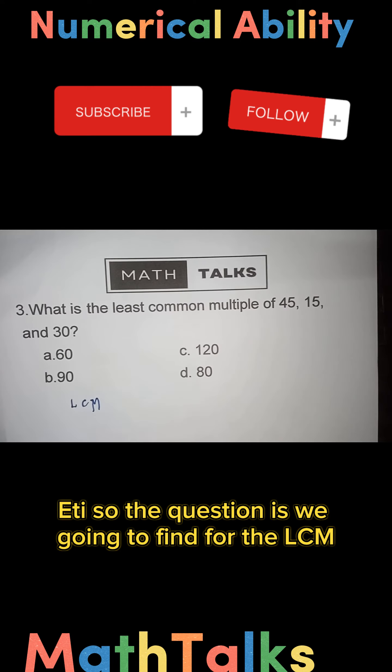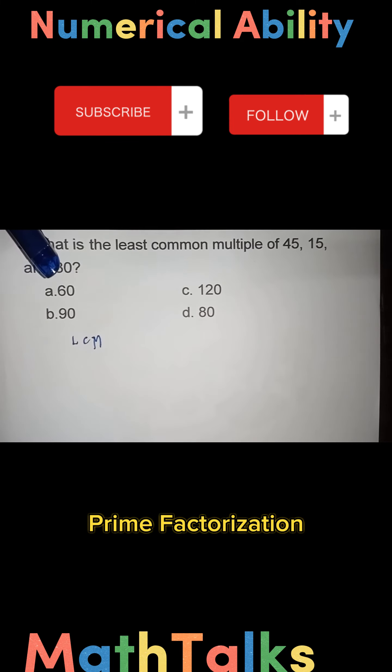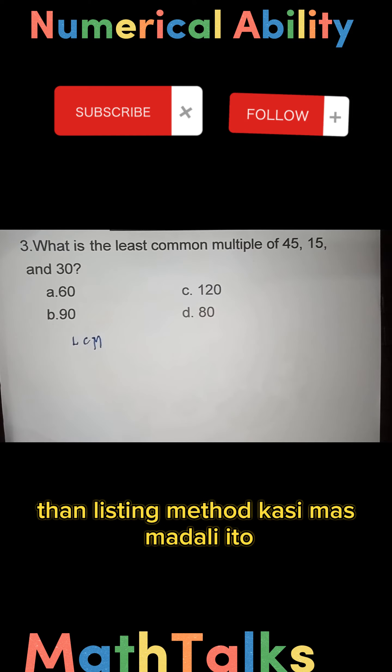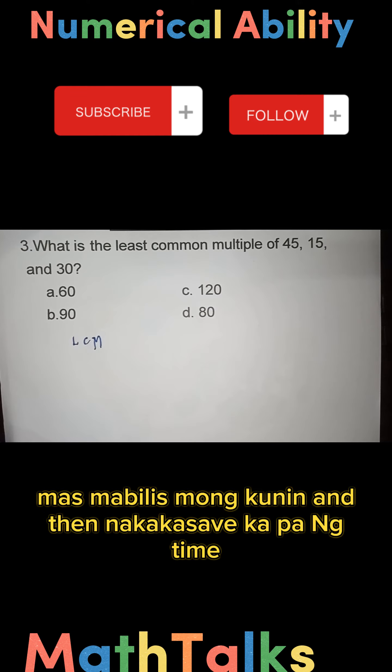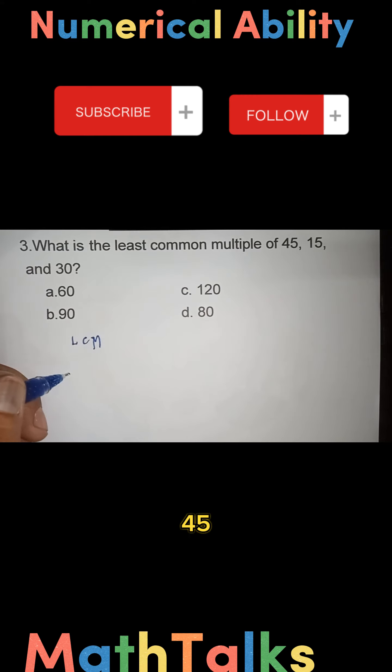I prefer you to use the prime factorization rather than the listing method because it's easier and faster, and you can save time. So let's master the basics. We have 45, 15, and 30.